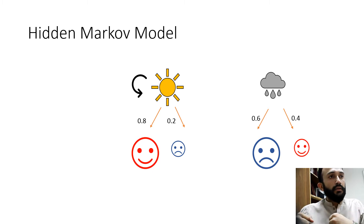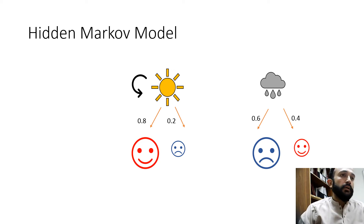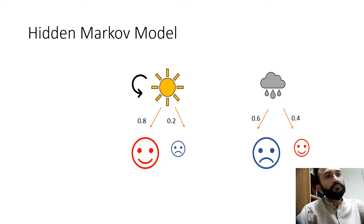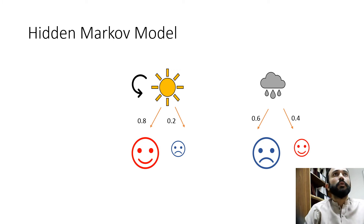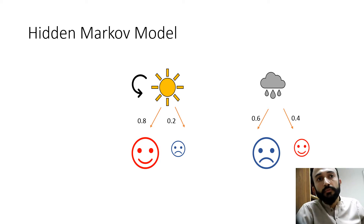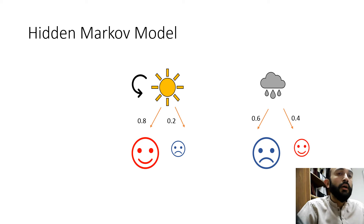There are two different things: one is a hidden state and one is an observed state. For example, if Bob is mostly happy on a sunny day, and we want to predict whether Bob is happy — we don't actually know if Bob is truly happy or not. But based on the observation that it is a sunny day, we can predict the probability of Bob being happy. That hidden condition we cannot directly observe is called the hidden state.